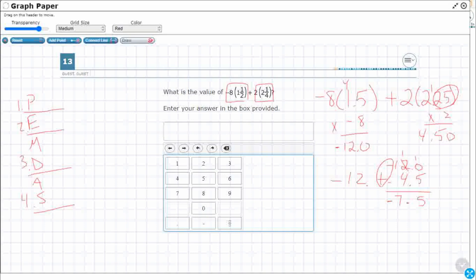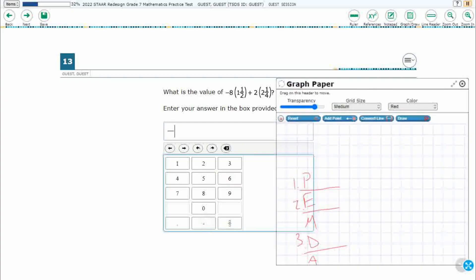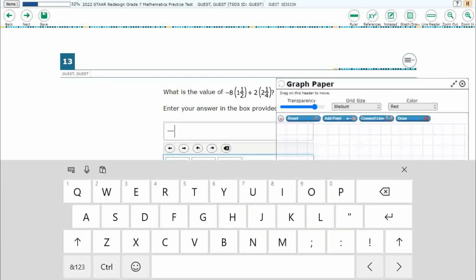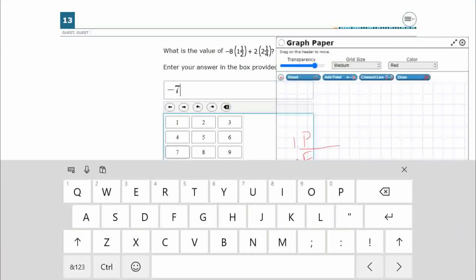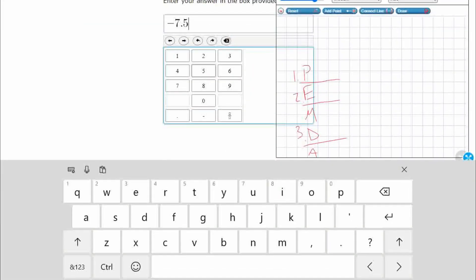Now, there are many different ways that we could solve this, write this in there. So first, we could just write, here's my negative, and we could just do 7, and we could do 0.5.